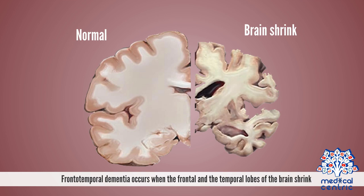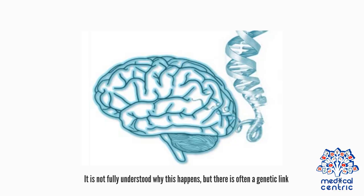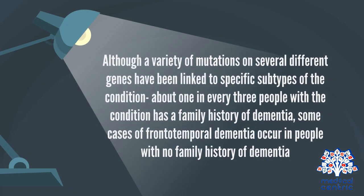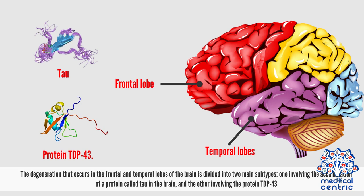Causes. Frontotemporal dementia occurs when the frontal and temporal lobes of the brain shrink. It is not fully understood why this happens, but there is often a genetic link. Although a variety of mutations on several different genes have been linked to specific subtypes of the condition, about 1 in every 3 people with the condition has a family history of dementia. Some cases occur in people with no family history of dementia. The degeneration is divided into two main subtypes: one involving the accumulation of a protein called Tau in the brain, and the other involving the protein TDP43.